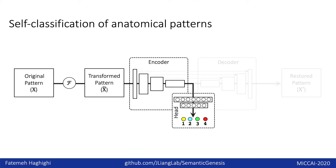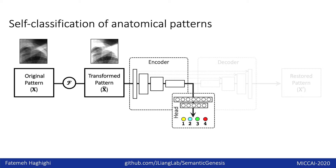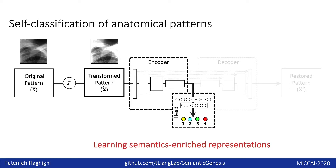The second component is self-classification. It aims to classify anatomical patterns based on their semantic labels, which have been obtained through our self-discovery. Given an anatomical pattern, we first transform it and then feed it into the model to predict its pseudo-label. Our self-classification consists of an encoder and a classification head. The input is the anatomical pattern and ground truth is its pseudo-label. By classifying the anatomical pattern, the model learns semantics and rich representations from recurrent anatomical patterns.